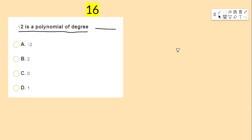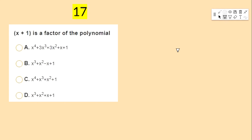Next bit: the degree of the polynomial √2 is — options: √2, 2, 0, 1.